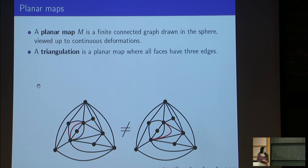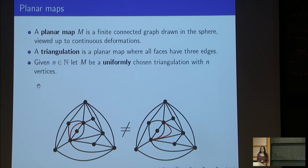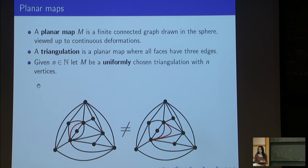A triangulation is a planar map where all faces have three edges. Given some natural number n, there are finitely many triangulations with exactly n vertices. When we work with random planar maps, we always assume the planar map has been chosen uniformly at random from this finite set of maps.